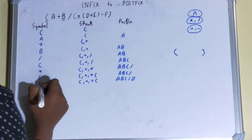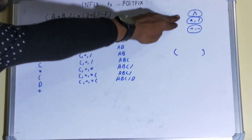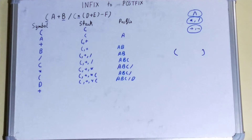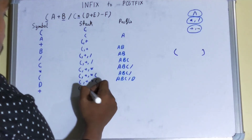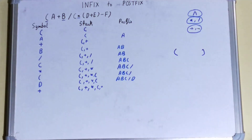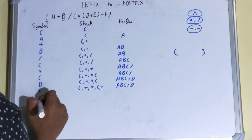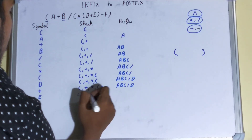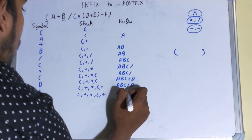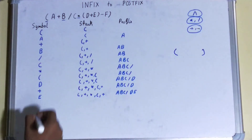After D comes plus. You might wonder whether to pop or not, but since we don't need to worry about the brackets when comparing priority, we just stack plus in. So now we have five operators in the stack. The next element is E, which is an operand, so we add it to the postfix column without any problem.